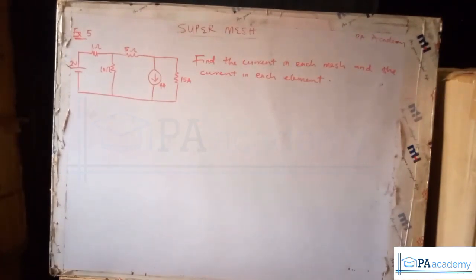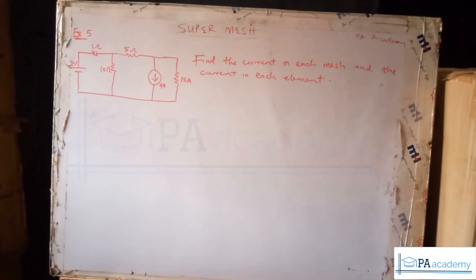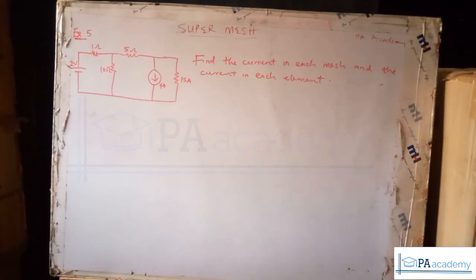All right, let me go ahead and solve it. If you got your answers to be approximately 3, 3, and minus 1, then you are correct. Let's go ahead and solve it.